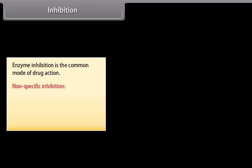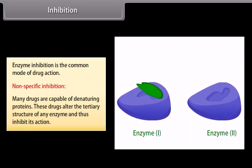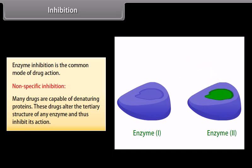Non-specific inhibition: many drugs are capable of denaturing proteins. These drugs alter the tertiary structure of an enzyme and thus inhibit its action. For example, heavy metal salts, alcohol, formaldehyde, and phenol inhibit enzymes non-specifically.